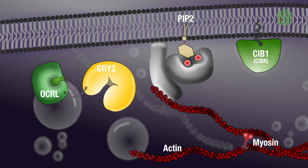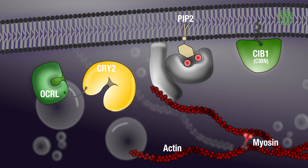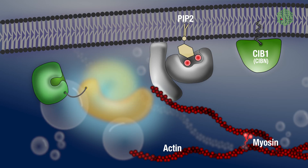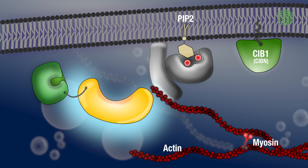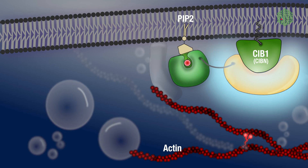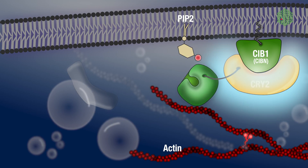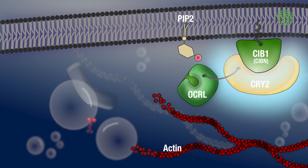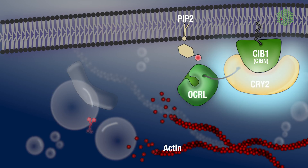Embryos kept in the dark are imaged with red light and show normal ventral furrow formation. When we start the microscope and shine blue light on the embryo, OCL-Cry2 gets activated and Cry2 gets recruited to CIBN at the membrane. Once at the membrane, OCL starts a signaling cascade that leads to the depolymerization of actin at the cortex and eventually blocks contractility of the cells.